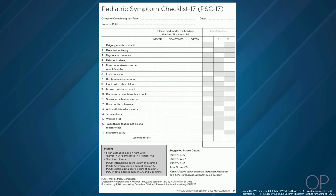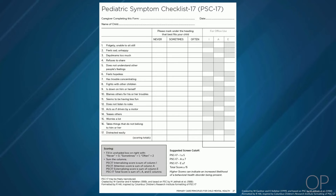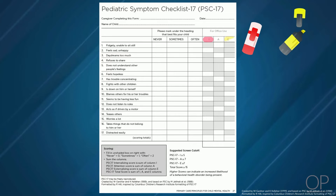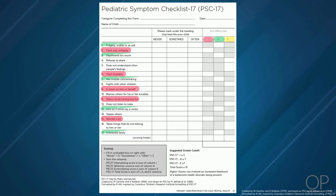The Pediatric Symptom Checklist, or PSC-17, is another screening tool providers should be familiar with. It is a general mental health screening tool used typically in primary care practices and asks questions about internalizing symptoms, externalizing symptoms, and problems with attention. Though not specific for anxiety disorders, positive internalizing scores are concerning for anxiety and other mood disorders. This screening tool is designed to be used from ages 4 to 15, with adolescents 11 and up completing the YPSC themselves.